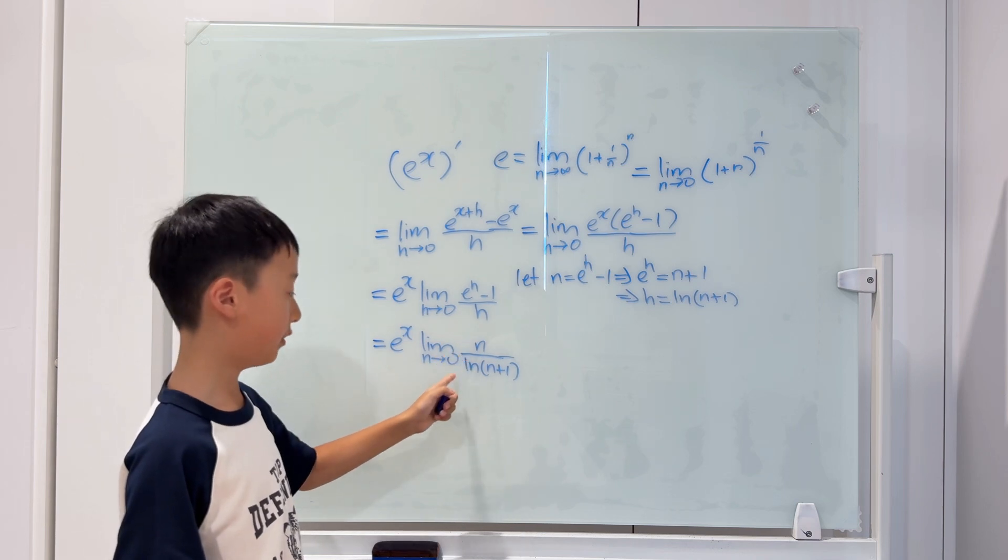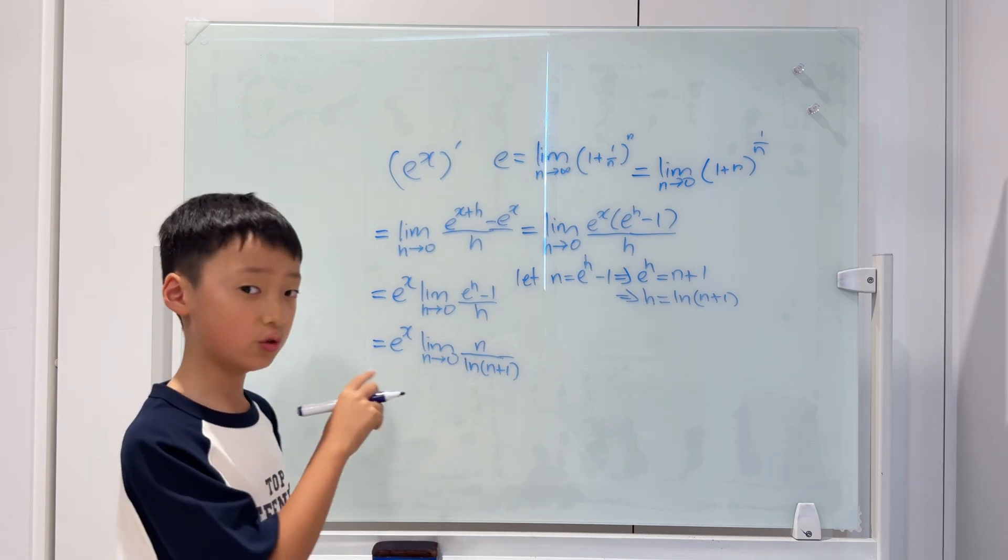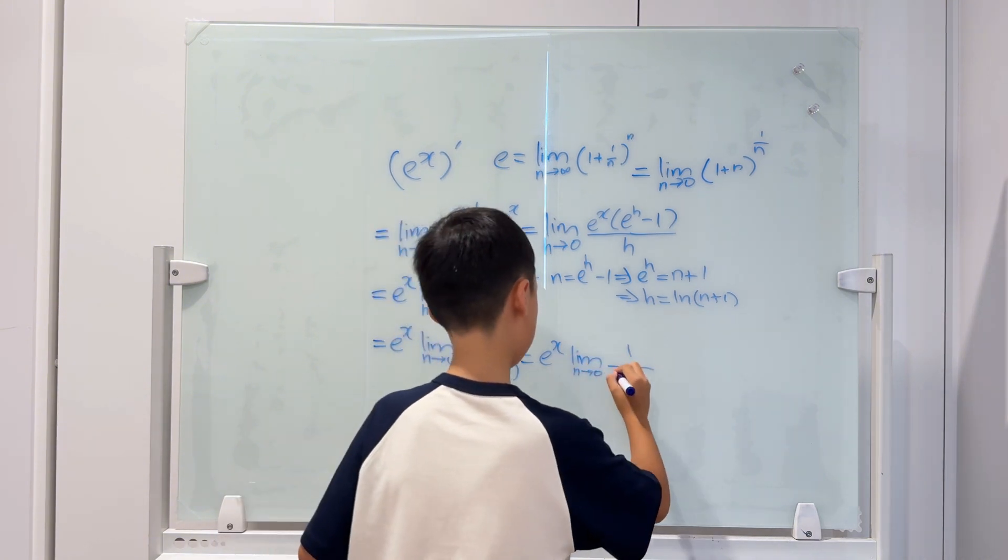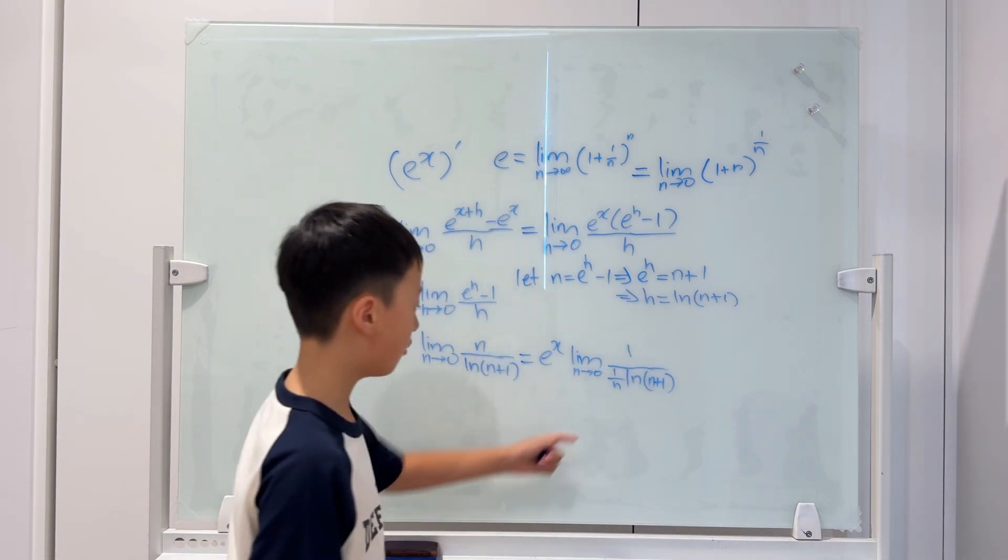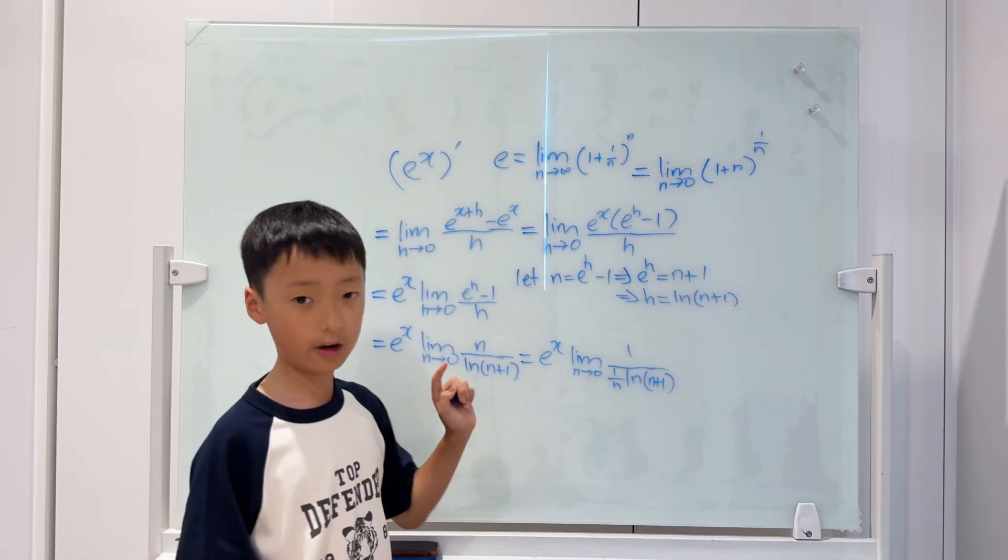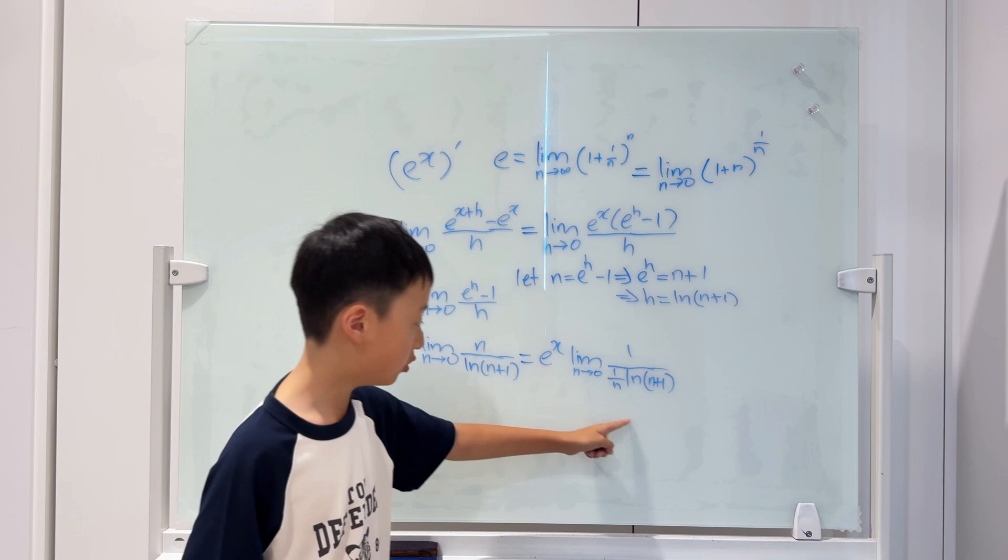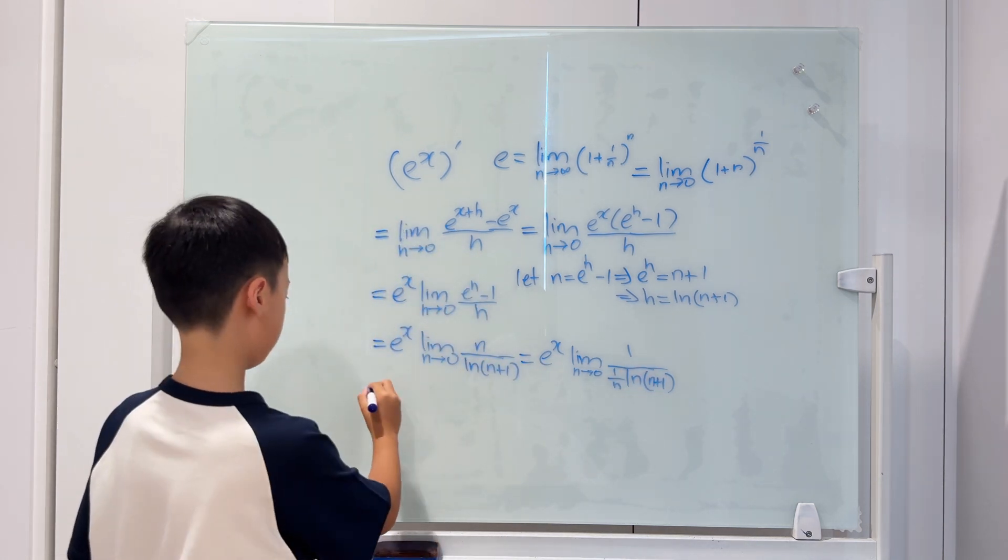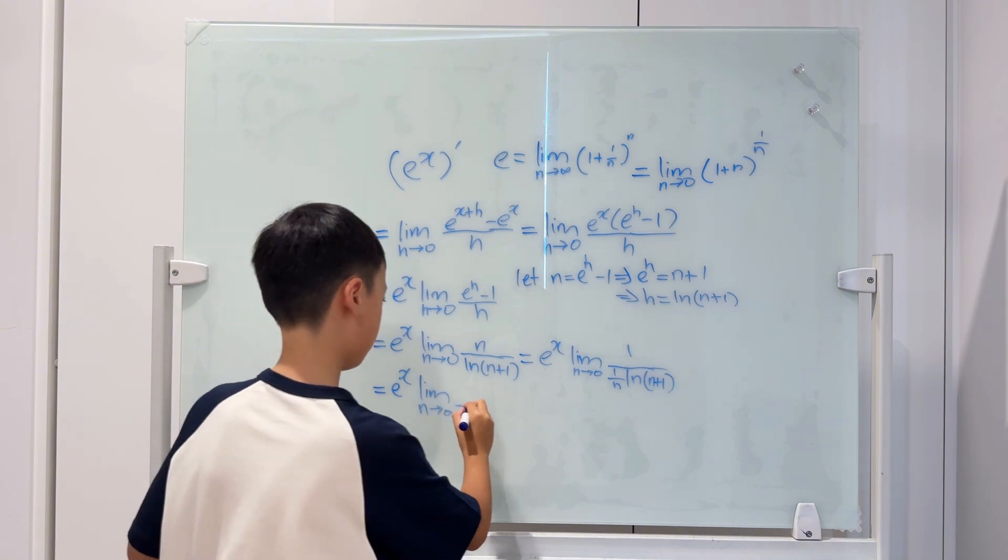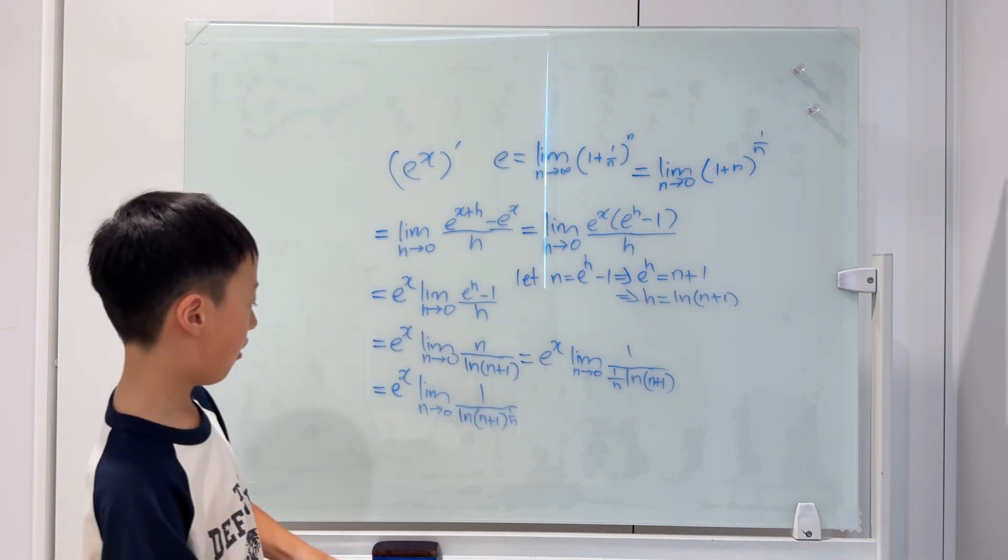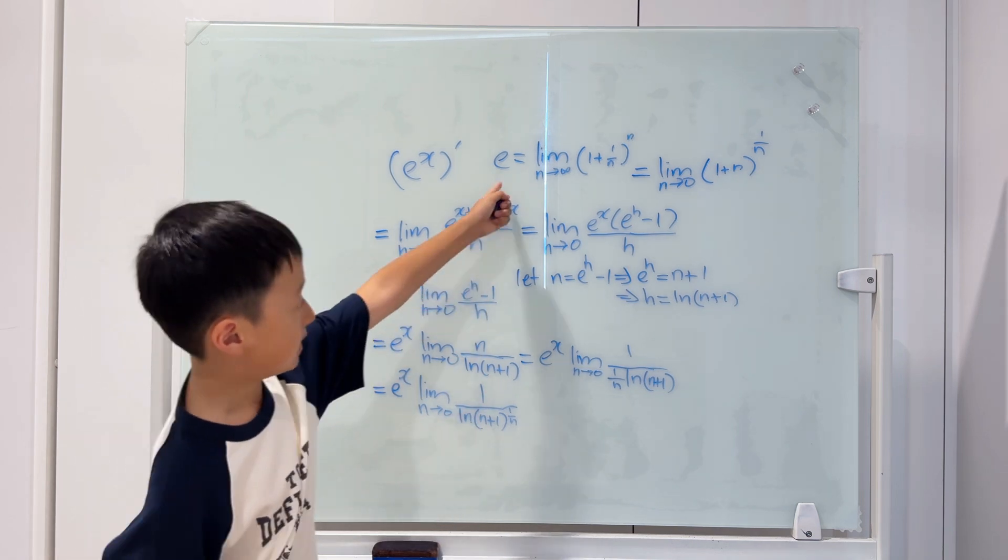We can put this n on the denominator by just changing it into 1 over n. Now, we see this looks very alike to that. So, our final step is to just change this 1 over n to the power, because that is one of the law and properties. As we know, this is e.